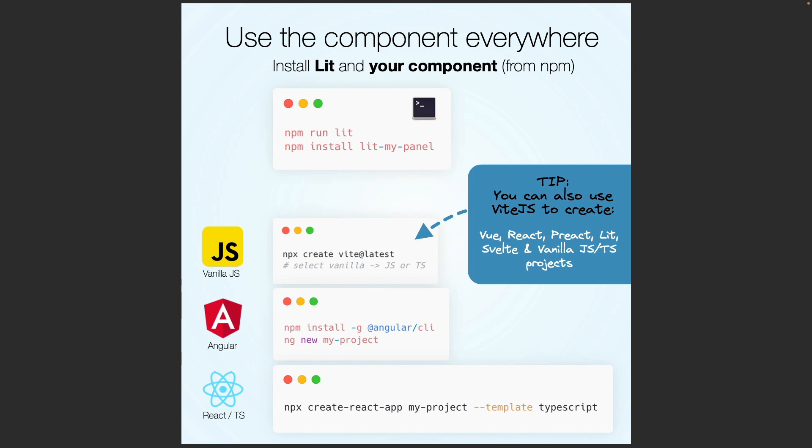If you want to try it in a vanilla JavaScript project, you can simply create one using Vite and selecting a vanilla JavaScript or TypeScript project. Vite can also be used to create React, Preact, Svelte, Lit projects, and so on. But if you are using Angular or React, I suggest you use the official CLI — Angular CLI for Angular, and Create React App for React.